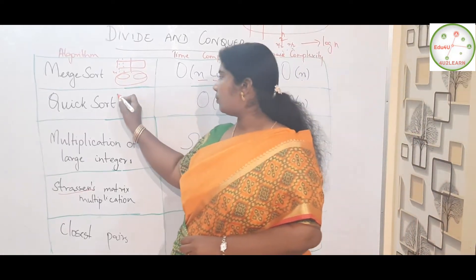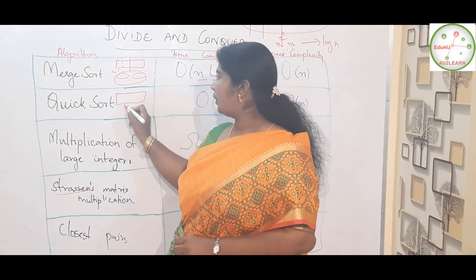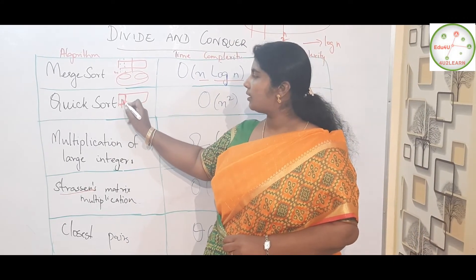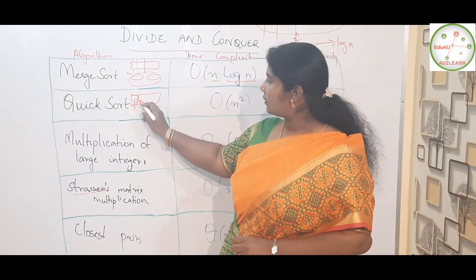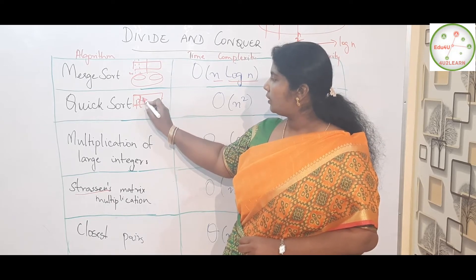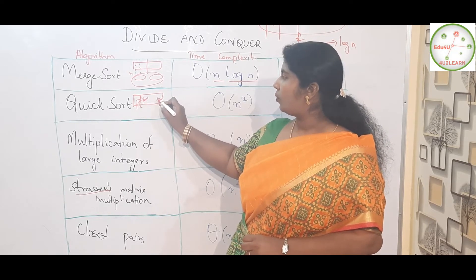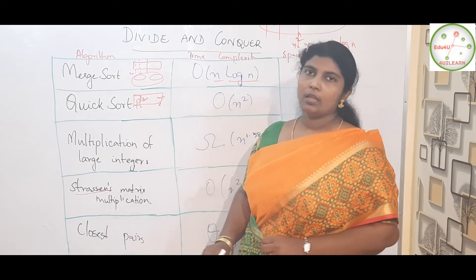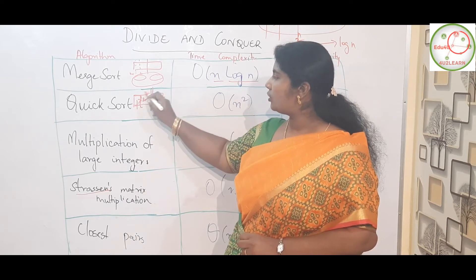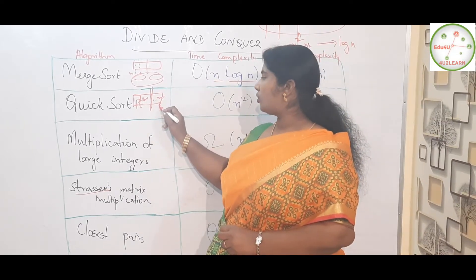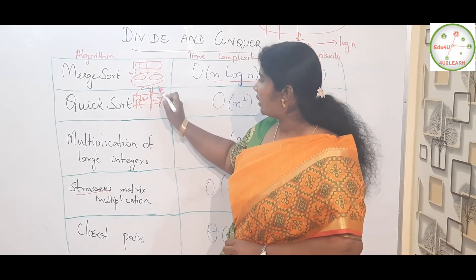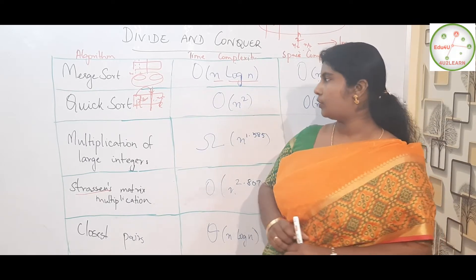Now, quicksort. Quicksort is another method. We have an array, and the first element is taken as the pivot element. Comparison goes from both the left end and the right end — all elements on the left are lesser than the pivot, and elements on the right are greater. At one point, the pivot element is placed in its correct position — that is the replacement.